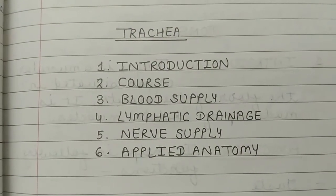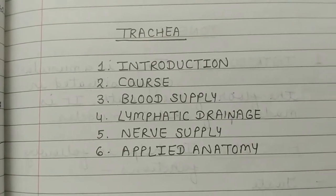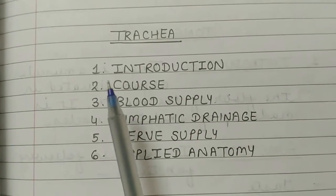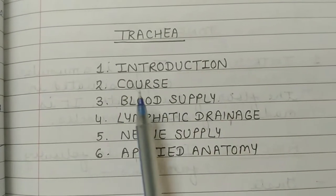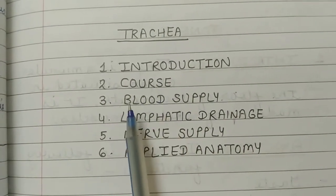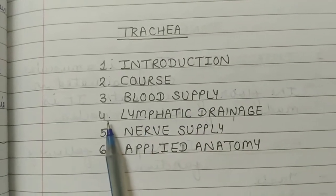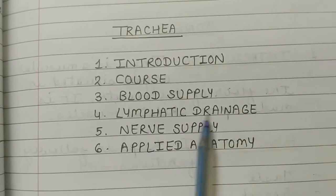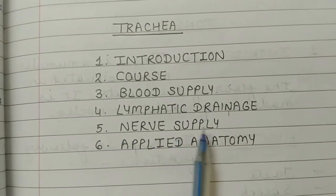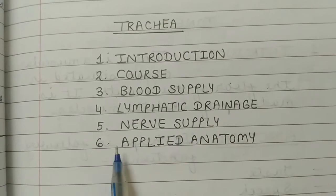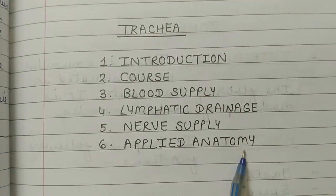Trachea ko following headings ke under describe karenge: 1. Introduction, 2. Course, 3. Blood Supply, 4. Lymphatic Drainage, 5. Nerve Supply, 6. Applied Anatomy of Trachea.